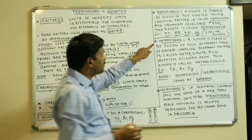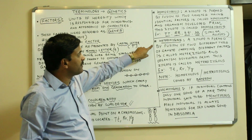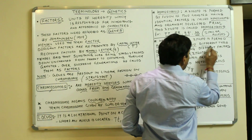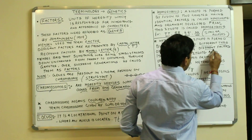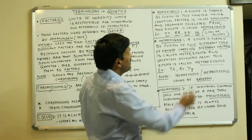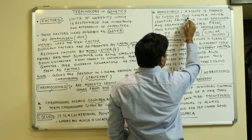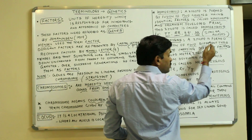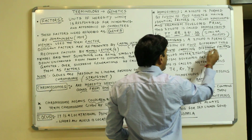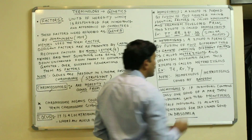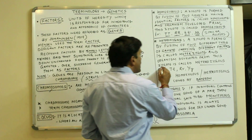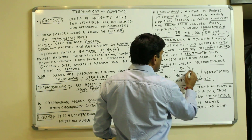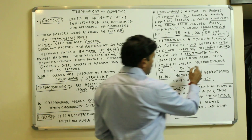If we talk about the heterozygote — 'hetero' means different — a zygote is formed by fusion of two different types of gametes carrying different factors. It is called a heterozygote, and the organism developed from this zygote is called heterozygous. For example: capital T small t, capital R small r, capital Y small y — this is a pair of dissimilar alleles.